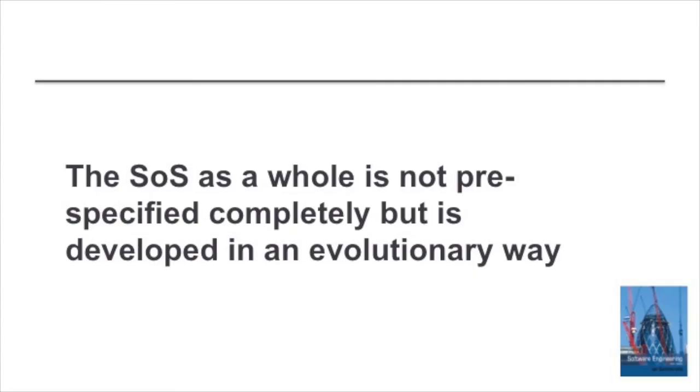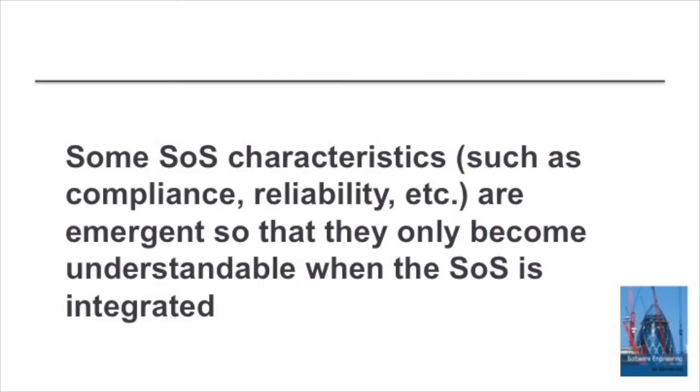Evolutionary development is another characteristic of systems of systems. We never sit down and say 'let's design a system of systems' — they always come into being when we look at existing systems and say we could integrate these, perhaps provide some extra functionality, and have an enhanced system. So they develop in an evolutionary way over time; they're not designed top-down as might happen with a new system.